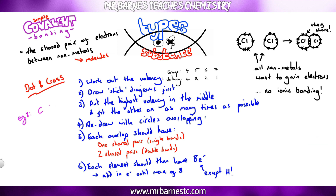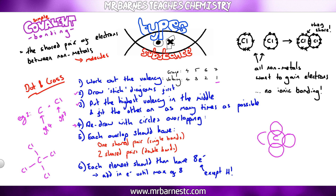For a second example, carbon reacting with chlorine: carbon is in group four so makes four bonds, and chlorine is in group seven so makes one bond. I put carbon in the middle and chlorine around the outside, so straight away I know my formula is CCl4. I then redraw with circles overlapping — carbon in the middle with four circles overlapping with Cl. I've only got single bonds, so I put one dot and one cross in each overlap, then make sure everything has eight electrons in the outer shell. Carbon already does, but the chlorines don't, so I fill them out.